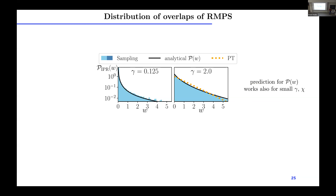The black line represents the probability distribution we obtained analytically for different values of gamma, while the blue histogram is obtained by sampling random realizations of MPS. We find pretty good agreement even for very small gamma, which is a bit surprising because in deriving this formula we used the limit where N also goes to infinity. But still our analytical predictions hold, and as you can see, this overlap distribution tells you how the distribution approaches the Porter-Thomas. You get the Porter-Thomas for large gamma.